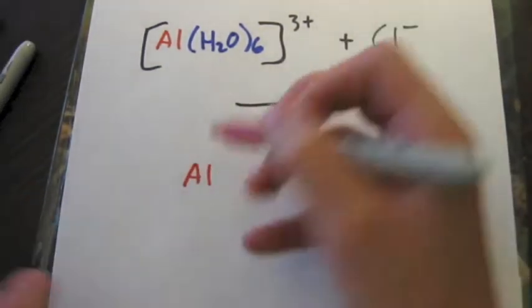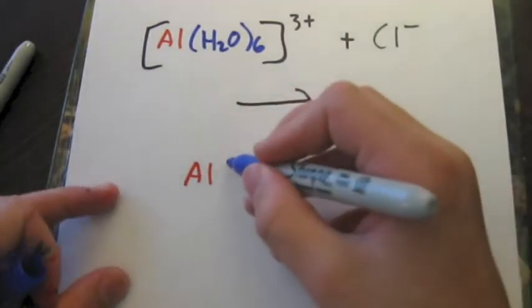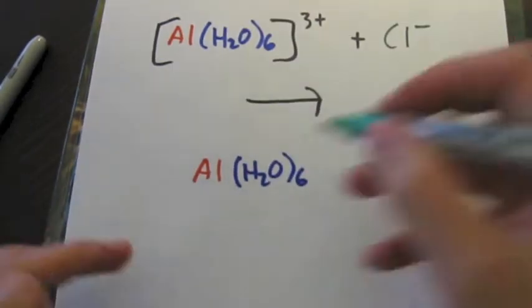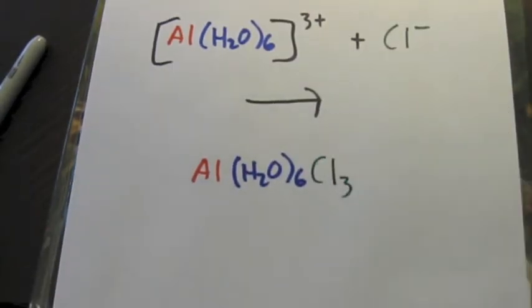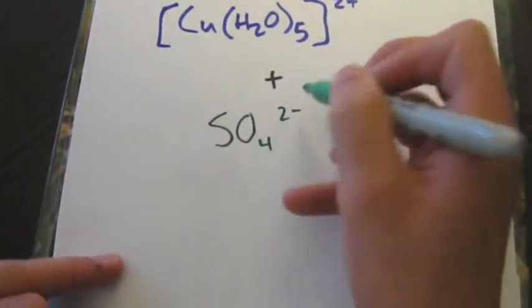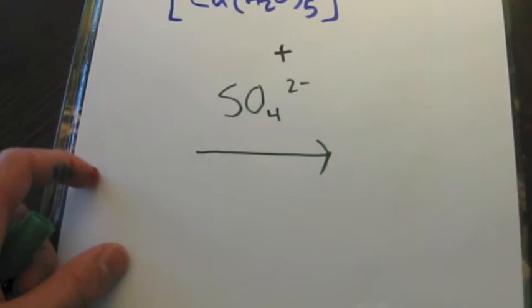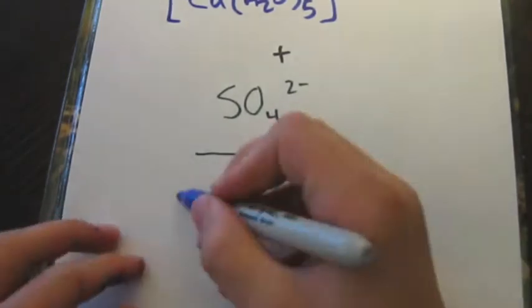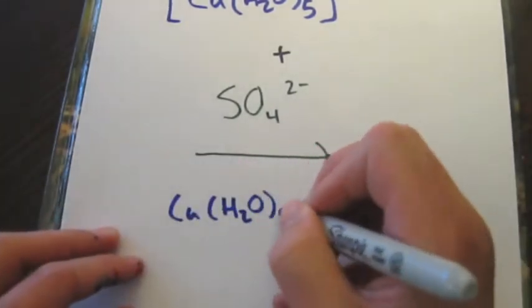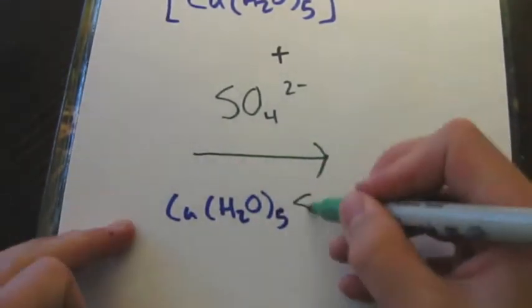In this case, we have aluminum chloride hexahydrate, or hexahydrated aluminum chloride. Copper(II) sulfate pentahydrate forms when a Cu²⁺ cation, surrounded by 5 water molecules as ligands, bonds with a sulfate anion.